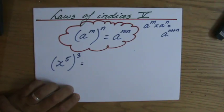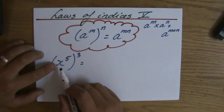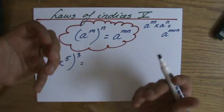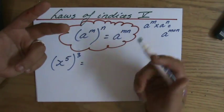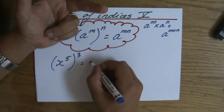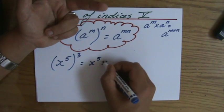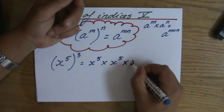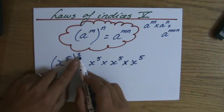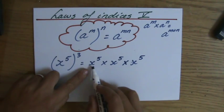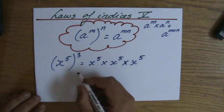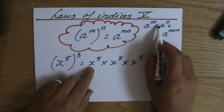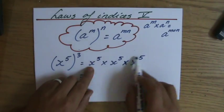I want to show you why that is nothing to be scared of. You don't have to just memorize it: x to the power 5, to the power 3, means multiplying by itself three times. So x to the power 5, multiplied by itself three times — one, two, three — and then the first law of the indices says you add the indices, because the bases are the same.